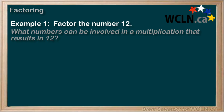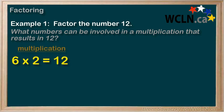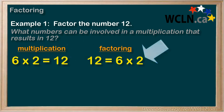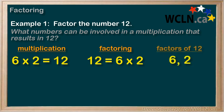Thinking back to our times tables, we know that 6 times 2 equals 12, and this is written as a multiplication question: 6 times 2 equals 12. But if we turn it around, we have a factoring problem. Here, we ask what numbers can be multiplied to get 12 — we break it down. That's a factoring question. So we can now list 6 and 2 as factors of 12.